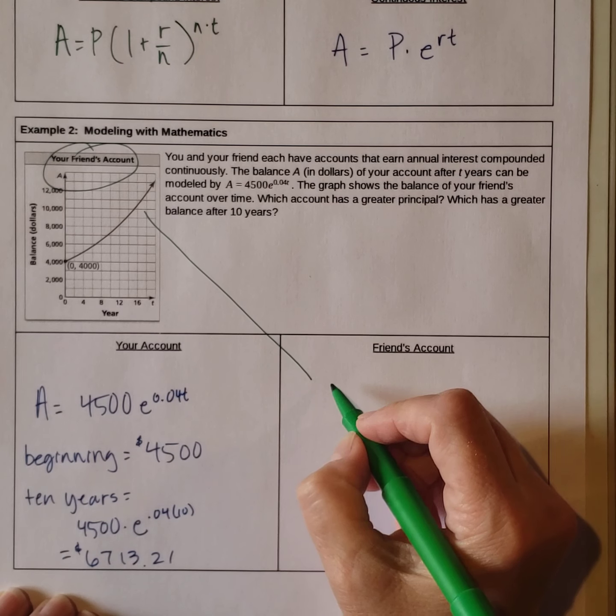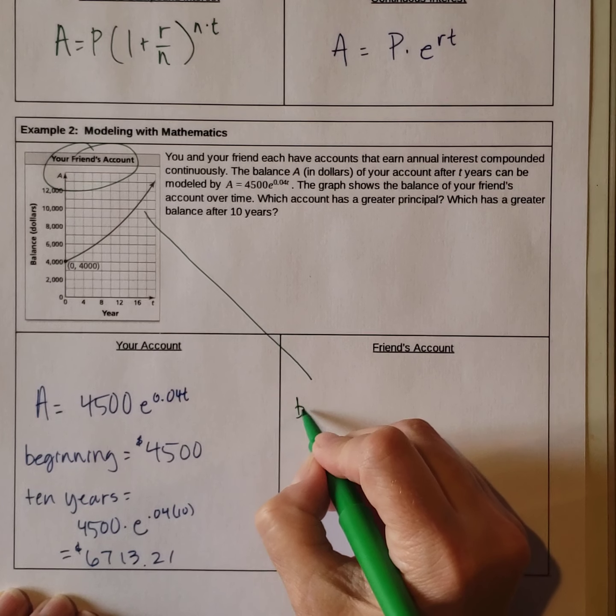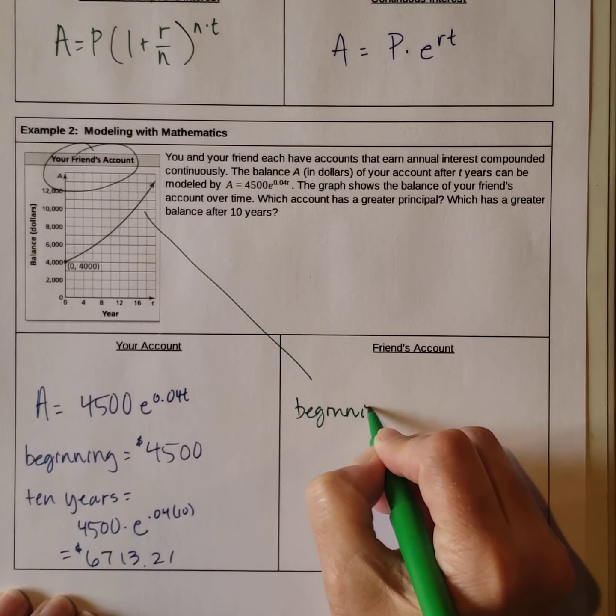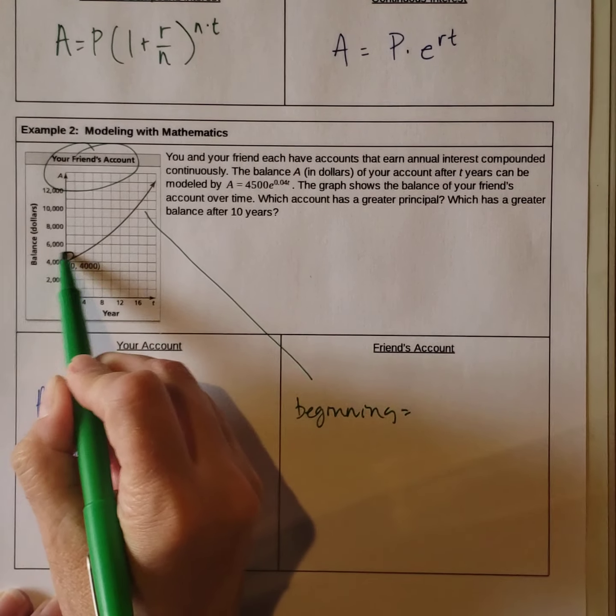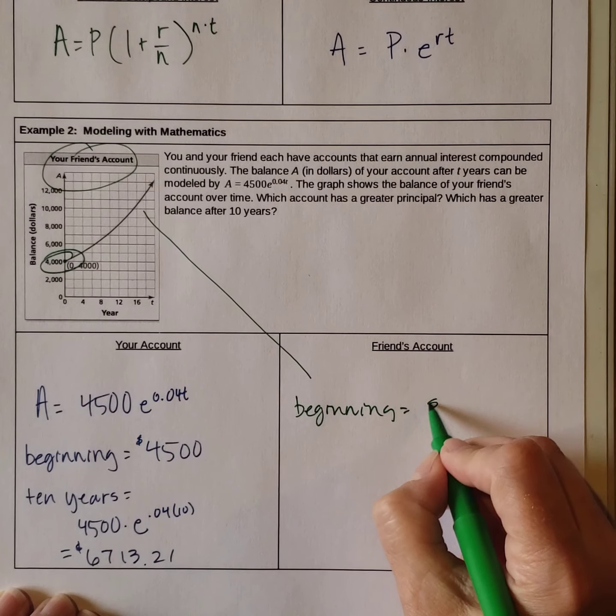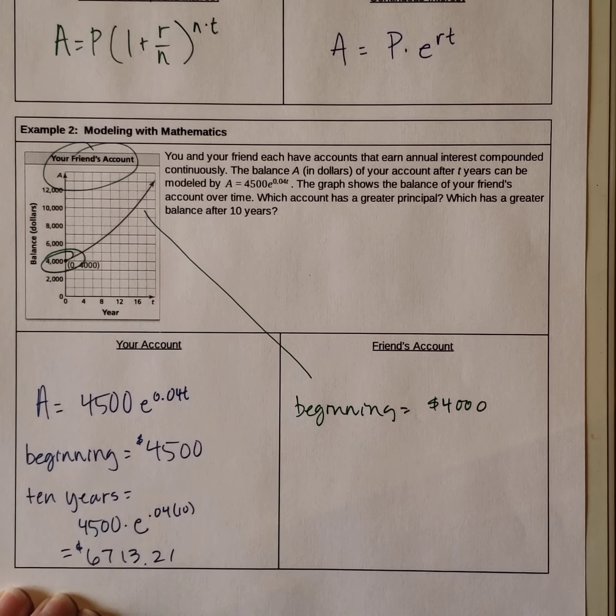So your friend's account: when you look at the graph, what's the beginning value? It's starting here at $4,000. So the beginning amount of your friend's is $4,000.